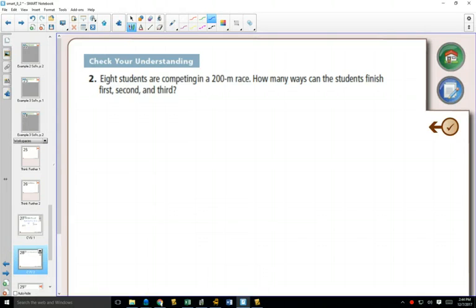Eight students are competing in a 200-meter race. How many ways can the students finish first, second, and third?